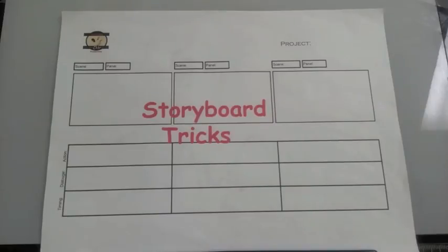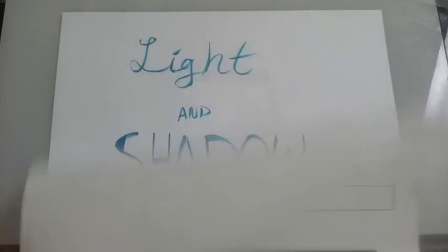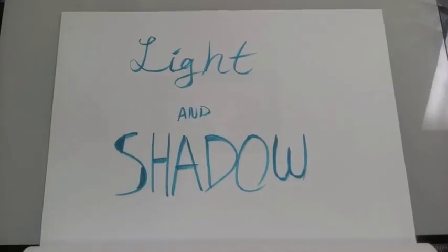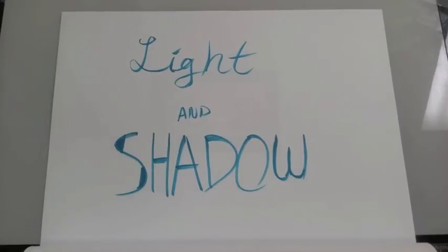Hello and welcome to Storyboard Tricks. Today we're going to talk about how we could use light and shadow to tell our stories. The book Framed Ink provides some wonderful examples. The author uses light and shadow to give the audience insight to the character's thoughts, emotions, and their relationship between each other.